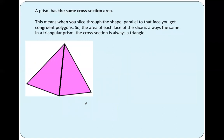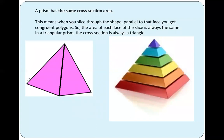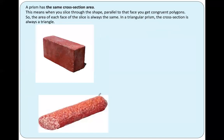Let's have a look at this pyramid. Can pyramids be a prism? It is a square-based pyramid — but is it a prism or not? You can do a little investigation to find out if you can find a same cross-section area, but actually this shape doesn't have a same cross-section area. You can see it is sliced parallel to the base, and the surface area of each cross-section is not the same. So pyramids are not prisms.